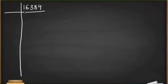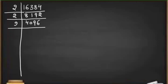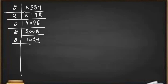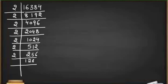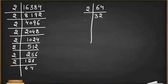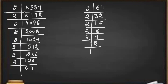This number is divisible by the prime number 2. We'll write down 2 here and divide to get 8192. Again dividing by 2 gives 4096, then 2048, then 1024, then 512, then 256, then 128, then 64. We keep dividing until we get 1 at the end. Finally we get 1, so our prime factorization is complete.